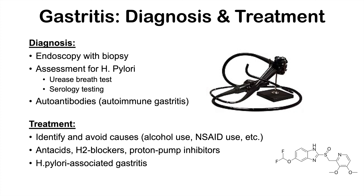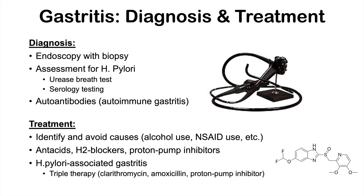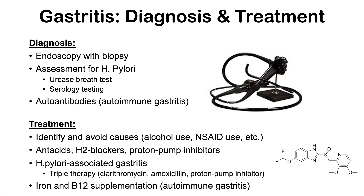In H. pylori associated gastritis specifically, triple therapy is used to eradicate H. pylori — this involves the antibiotics clarithromycin and amoxicillin along with a proton pump inhibitor. In the case of autoimmune gastritis, iron supplementation and B12 supplementation are also important due to the nutrient deficiencies associated with this form.